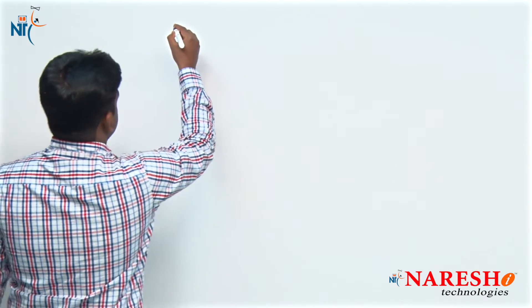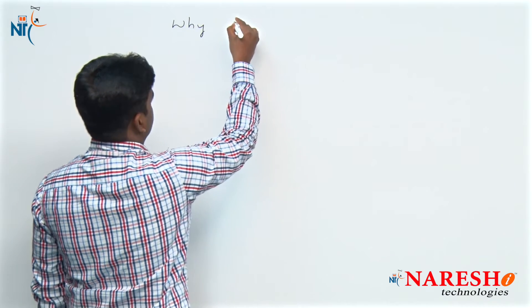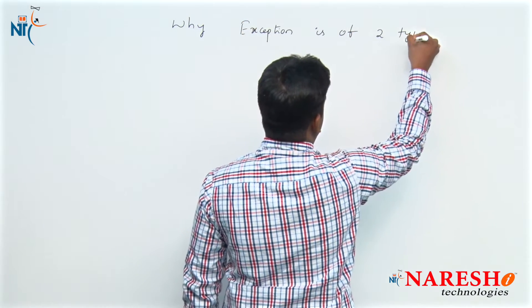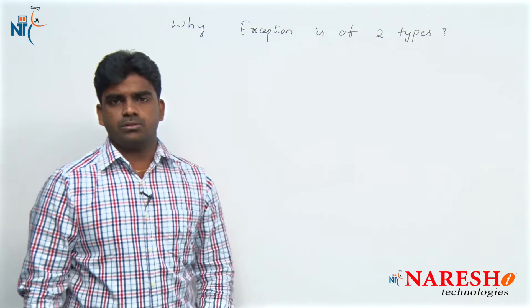We know that an exception is a runtime error — we can call it an exception. Why is exception divided into two types? Why checked exceptions and why unchecked exceptions? What is the main reason behind that? They can also ask: checked exception versus unchecked exception.